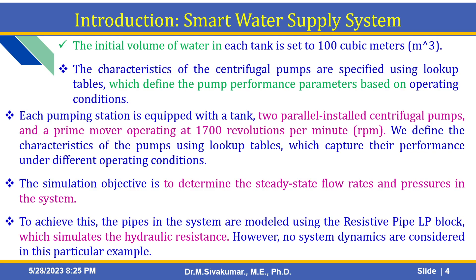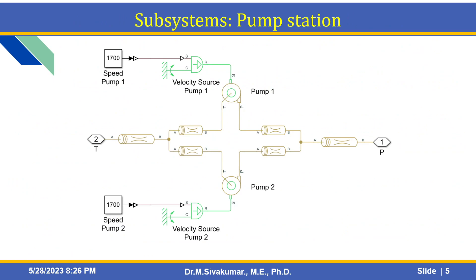In SimScape Fluid Toolbox, you can access the resistive pipe LP block, which simulates hydraulic resistance. However, no system dynamics are considered in this particular example — only hydraulic resistance is simulated. Each pump station has a subsystem containing a speed-up pump where you provide velocity input. This is a velocity source pump, and both pumps within each station use this setup. Pump and pipe models are designed as a subsystem for each pump station.